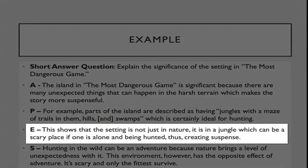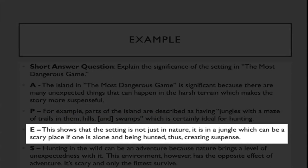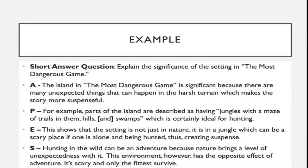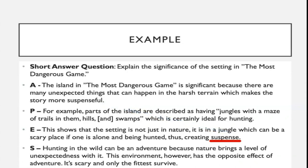Third, explain the quote: 'This shows that the setting is not just in nature. It is in a jungle, which can be a scary place if one is alone and being hunted, thus creating suspense.' This sentence does two things: it explains that the text evidence describes not just ordinary nature but a jungle — a scary place — and it connects that description to how suspense is created. The word suspense directly ties back to the first sentence, explaining the quote and connecting why it is strong evidence.